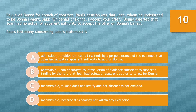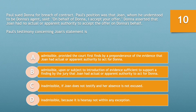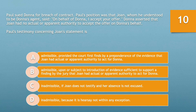Question number 10. Paula sued Donna for breach of contract. Paula's position was that Joan, whom he understood to be Donna's agent, said on behalf of Donna, 'I accept your offer.' Donna asserted that Joan had no actual or apparent authority to accept the offer on Donna's behalf. Paula's testimony concerning Joan's statement is: A. Admissible, provided the court finds, by preponderance of the evidence, that Joan had actual or apparent authority to act for Donna. B. Admissible, upon or subject to introduction of evidence sufficient to support a finding by the jury that Joan had actual or apparent authority to act for Donna. C. Inadmissible, if Joan does not testify and her absence is not excused. Or D. Inadmissible, because it is hearsay not within any exception. Take 10 seconds and choose the best option.